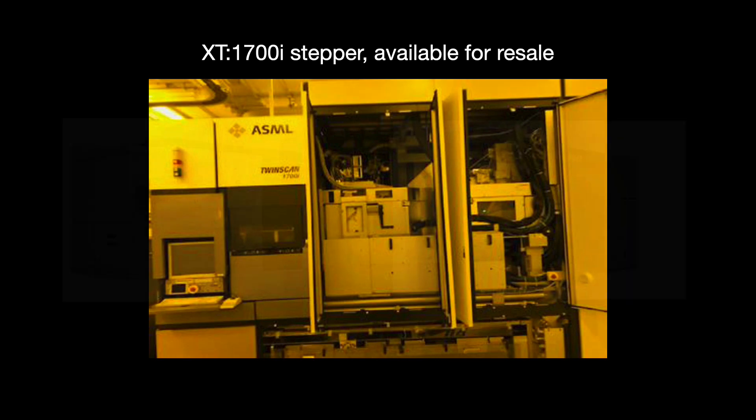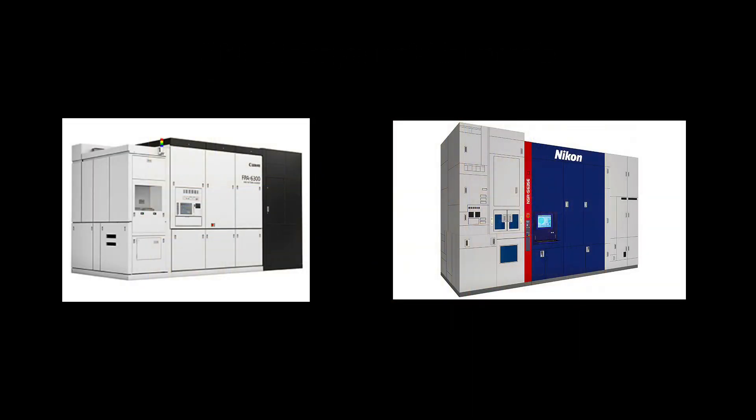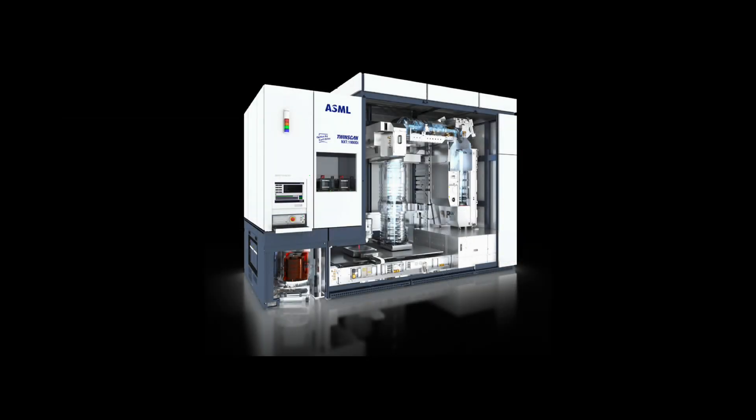ASML's Japanese rivals Canon and Nikon took longer to develop immersion. Canon never shipped one in the first place. Nikon's first prototype tool was completed in October 2004, nearly two years after ASML. But the race was not over. After the first generation of immersion lithography tools, ASML and Nikon immediately moved to developing the next generations of immersion lithography.